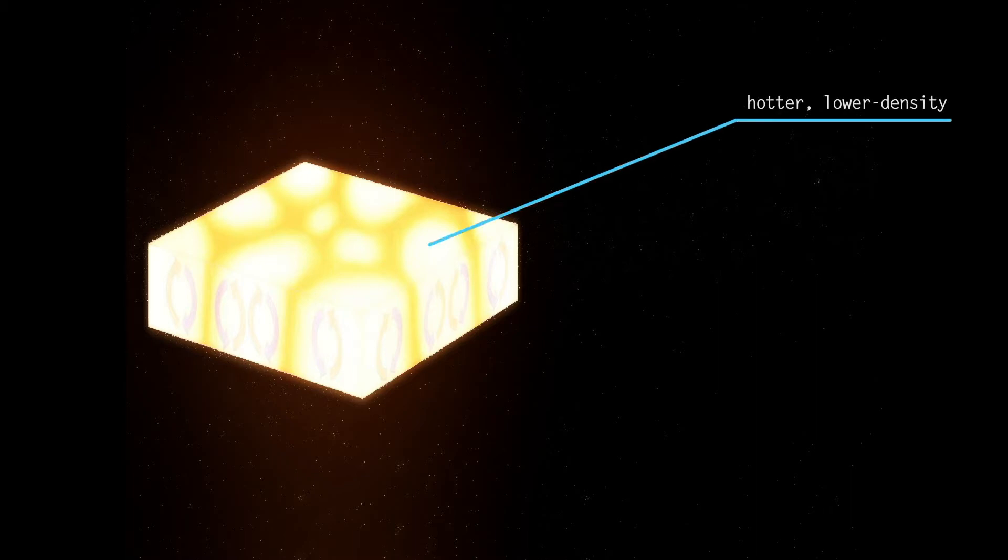Convection is the actual movement of material in fluids due to buoyancy. Hotter material has relatively lower density and thus it rises, much like a hot air balloon. Cooler material has higher density and thus it sinks.